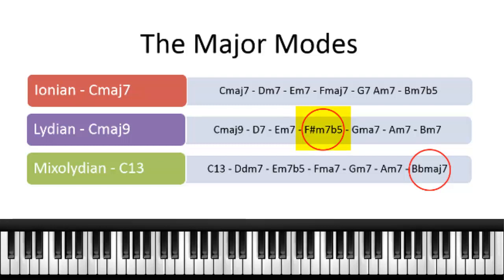The Lydian — C major Lydian, based on C as the parent scale — produces an F sharp minor seven flat five. That note is not in the major scale, and as a result of the intervals created by this mode, you end up with that sharp seven flat five. And likewise, using those intervals, a Mixolydian mode on C produces another chord outside of the scale — a B flat major seven. Let's take a look at how it sounds applied to a basic chord progression commonly heard in gospel.